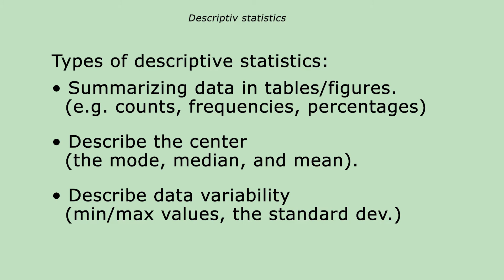A third type is to describe data variability by finding the minimum and maximum values of a variable. Another common measurement of variability is the well-known standard deviation, abbreviated SD.